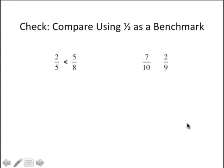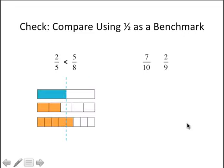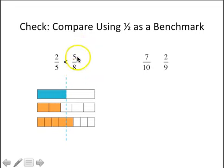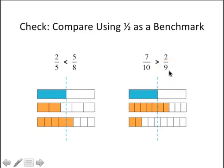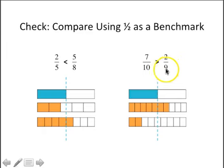Five-eighths is greater than two-fifths. Two-fifths is less than one-half — half of five would be two and a half, so two-fifths is less than one-half. Five-eighths is greater than one-half since four-eighths is equivalent to one-half and five-eighths is a little bit more. Seven-tenths is greater than two-ninths. Seven-tenths is more than one-half since five-tenths would be equivalent to one-half. And two-ninths is less than one-half — half of nine would be four and a half, and two is less than four and a half, so two-ninths is less than one-half.